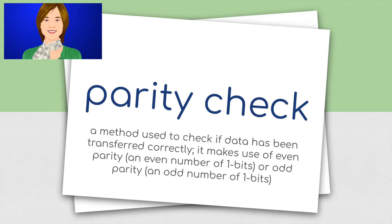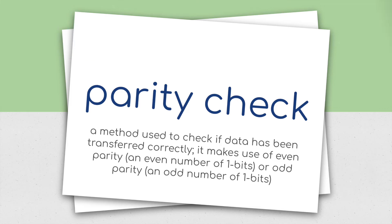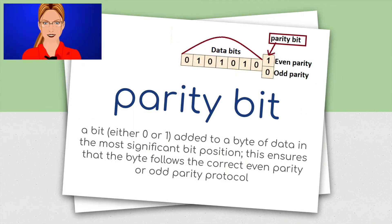Parity check: a method used to check if data has been transferred correctly. It makes use of even parity, an even number of 1 bits, or odd parity, an odd number of 1 bits. Parity bit: a bit, either 0 or 1, added to a byte of data in the most significant bit position. This ensures that the byte follows the correct even parity or odd parity protocol.